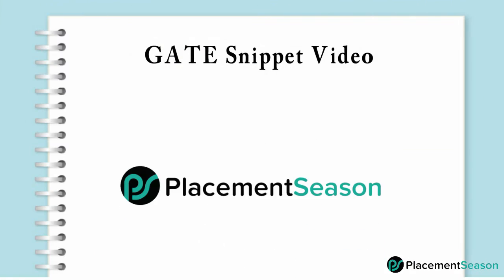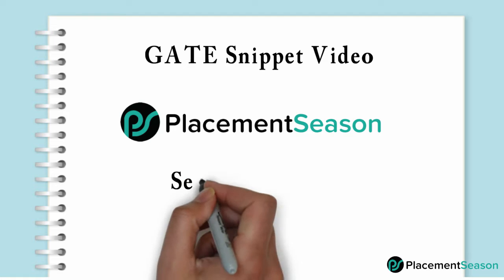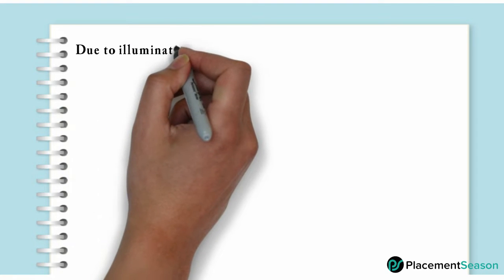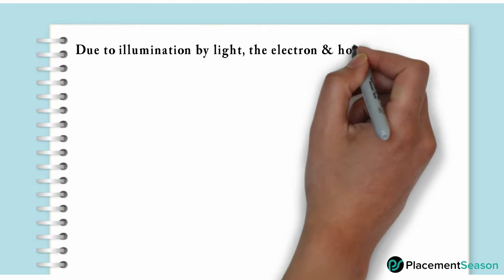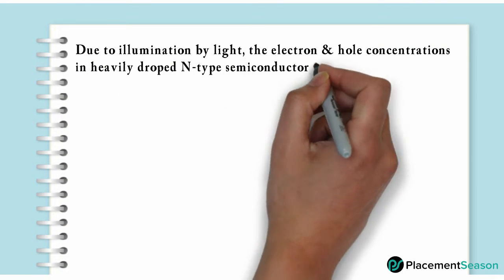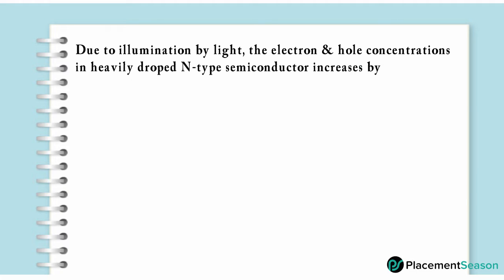Welcome back to GATE snippet video by Placement Season. Today we will solve a question on semiconductors. Due to illumination by light, the electron and hole concentration in a heavily doped n-type semiconductor increases